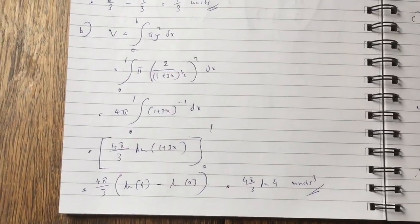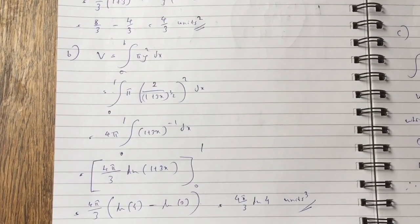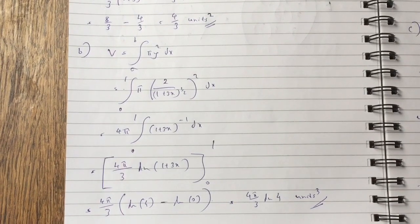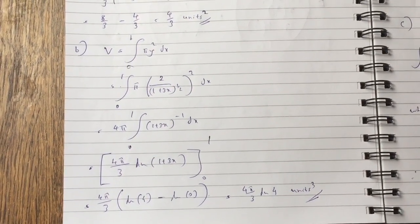Now for the volume, as you know the formula is V equals integral from A to B pi y squared dx. So you put the function in and as you see, when you square the 2 it goes as 4 pi outside.